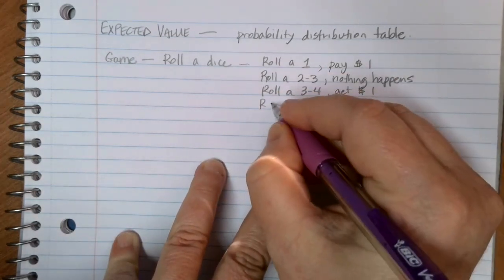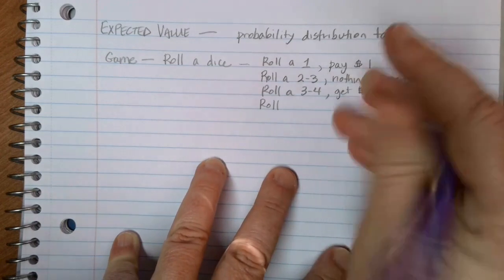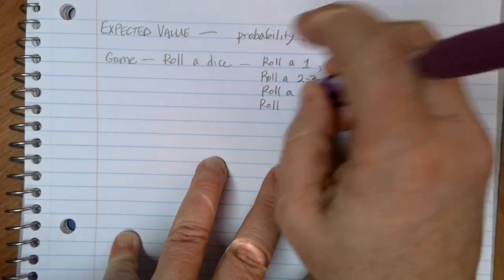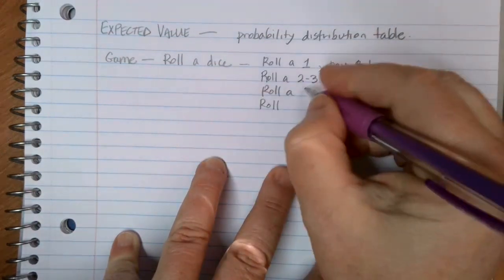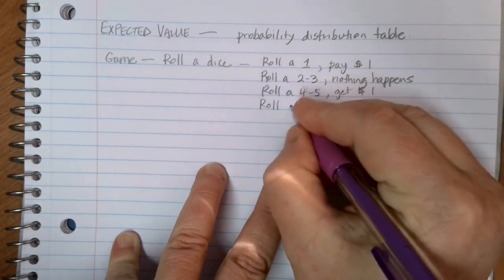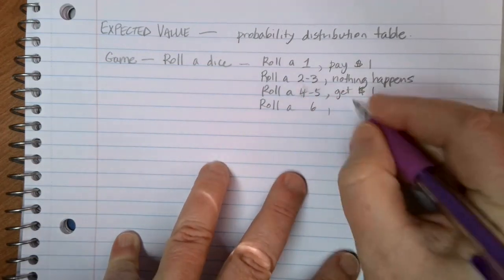And if we roll... oh, not a three or four, that can't happen twice. A four or five. There we go. And if we roll a six, we're going to get ten dollars.